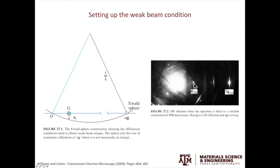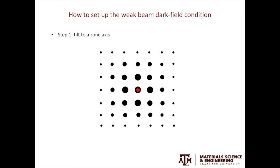Also in this example, the specific weak beam condition is G3G. G3G is the most widely used condition to form the weak beam dark field images. To help you understand how to set up the weak beam condition, I also made this animation.